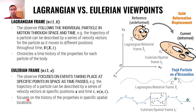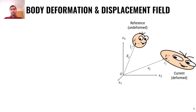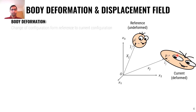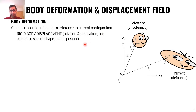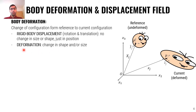The Eulerian frame focuses on the history of properties at a specific spatial location. Now let's define the concepts of body deformation and displacement field. We have a reference state — the undeformed case — and a current state after the body has deformed and moved in space. Body deformation is the change of configuration from reference to current configuration. For rigid body displacement, which includes rotation or translation, there is no change in size or shape — only change in position and orientation. But in the case of deformation, there is a change in size or shape.